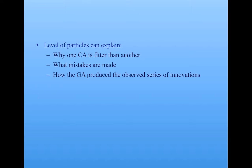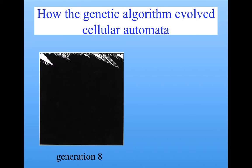We can explain why one cellular automaton is fitter than another, what mistakes they make, and how it was that the genetic algorithm produced the observed series of innovations that we saw in order to reach our high-fitness cellular automata. In short, the particles give an information processing description of the collective behavior. And we believe that this type of information processing description in terms of these kinds of particles is actually more general than just to the cellular automata.